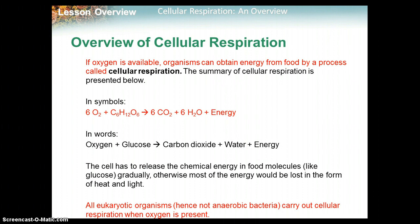If oxygen is available, organisms can obtain energy from food by a process called cellular respiration. The summary reaction is: six molecules of oxygen react with one molecule of glucose to produce six molecules of carbon dioxide and six molecules of water. When you breathe in, you breathe in oxygen; when you breathe out, you breathe out carbon dioxide and water vapor. You also produce energy. If you notice, this reaction is the exact opposite of photosynthesis.